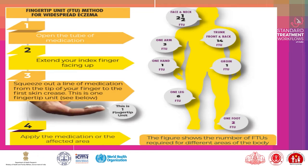In terms of fingertip units required per body area: the face and neck need two and a half fingertip units; the trunk front and back need 14 fingertip units; one arm needs three fingertip units; one hand needs one fingertip unit; the groin region needs one fingertip unit; one leg needs six fingertip units; and one foot needs two fingertip units.